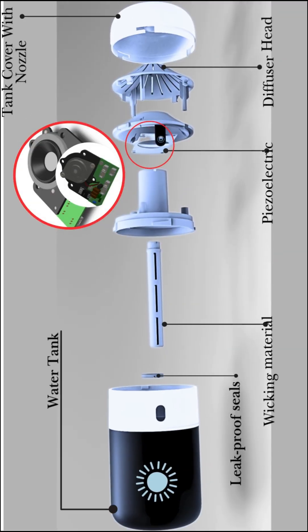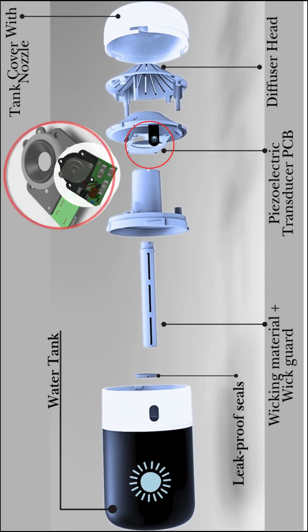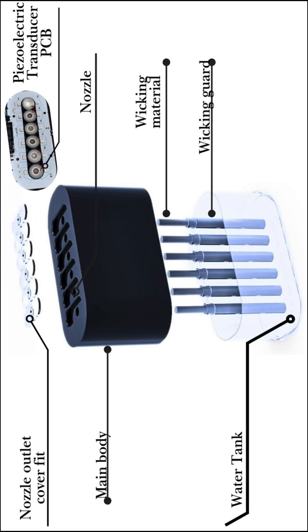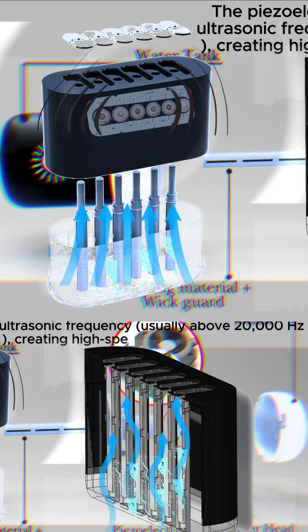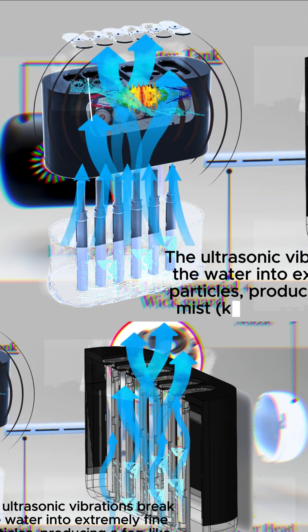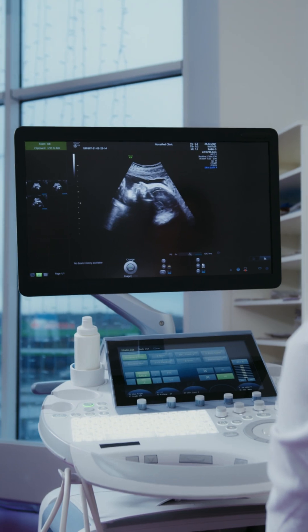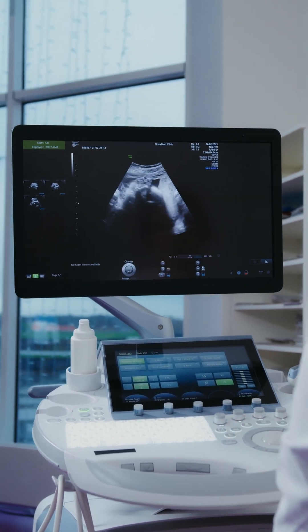Ultrasonic humidifiers convert water into cool mist via a piezoelectric diaphragm, which produces ultrasound vibrating at frequencies capable of breaking down water into fine droplets and eventually into a cool mist. As an aside, ultrasonic vibrations are also used in echography to form images like these—pretty cool.